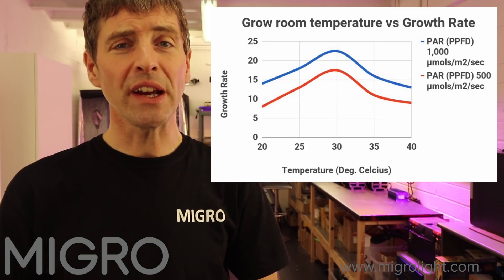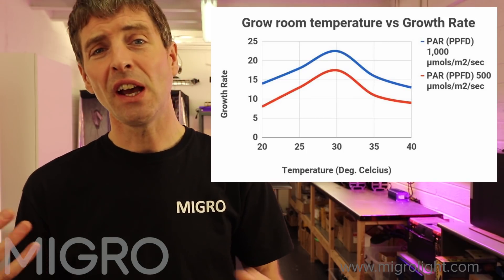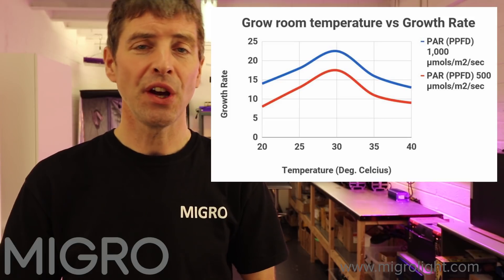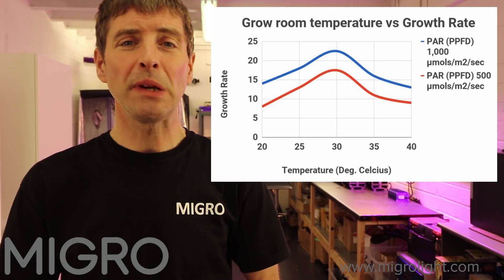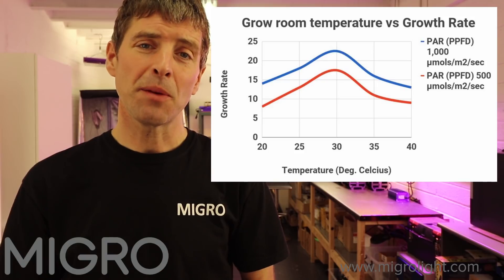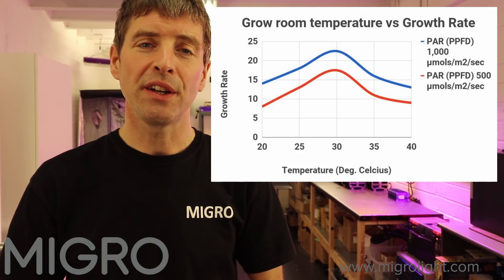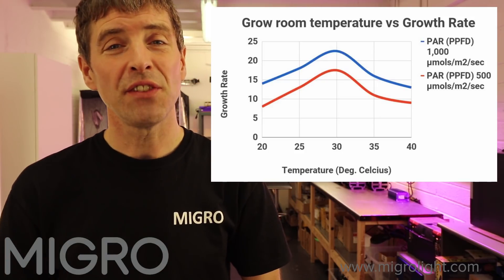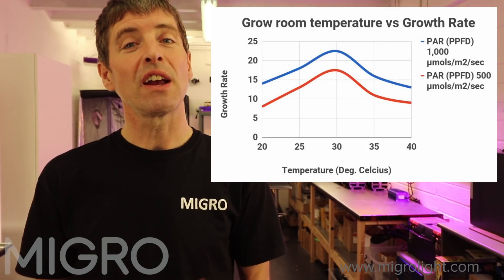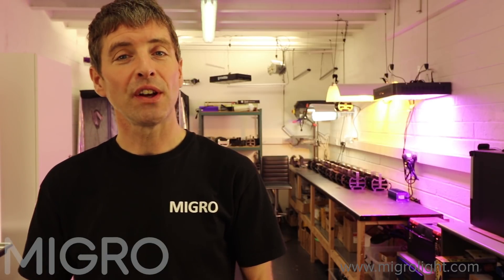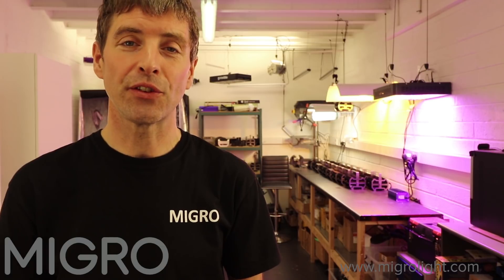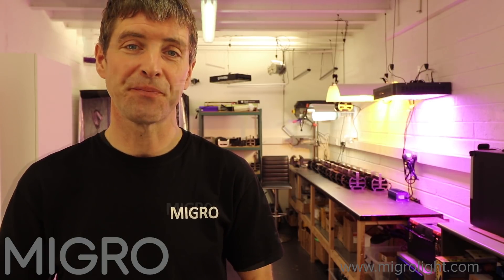Of course all different strains are going to have different requirements and needs in terms of temperature. Our suggestion would be that a safe band of temperature to operate in would be between 25 and 30 degrees Celsius, and you should get optimum growth and minimize the risk of distressing your plants through too high a temperature.